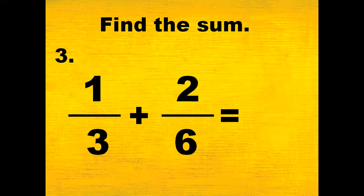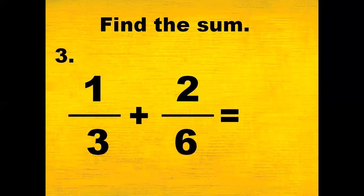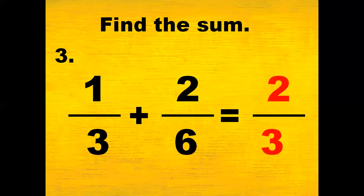Number 3: find the sum of 1 third plus 2 sixths. The answer is 2 thirds. If we got 2 thirds, then congratulations!